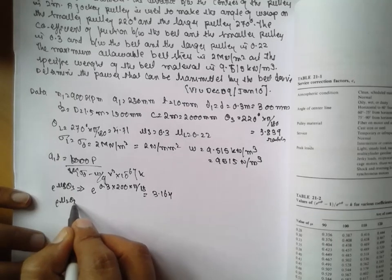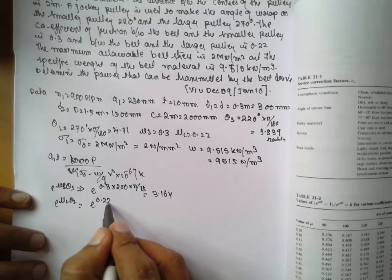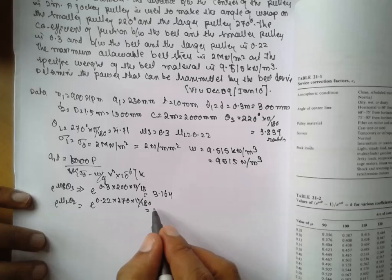Next, mu L theta L is equal to 0.22 into 270 into pi by 180. Answer will be 2.82.